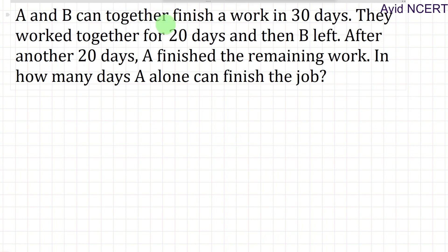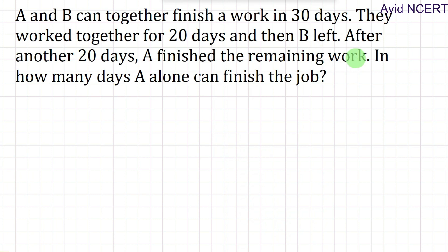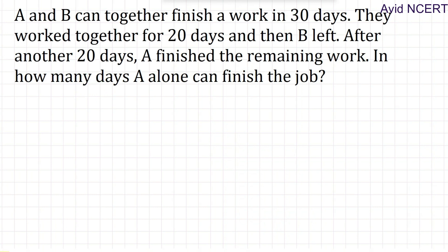A and B can together finish a work in 30 days. They work together for 20 days and then B left. After another 20 days, A finished the remaining work. In how many days can A alone finish the job?